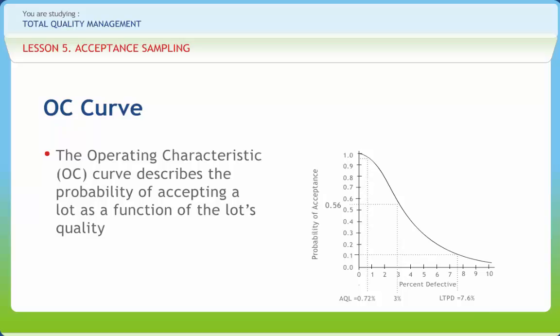What protection does the single sampling plan N equals 50 and A equals 1 provide? Since sampling plans make accept or reject decisions, this question is best answered in terms of what the sampling plan accepts and what it rejects. The AQL describes what a sampling plan will accept — lots at or below 0.72% defective are routinely accepted, meaning at least 95% of the time. The LTPD describes what the sampling plan rejects — lots at or above 7.6% defective are routinely rejected, meaning at least 90% of the time. Lots between the AQL and LTPD are sometimes accepted and sometimes rejected.